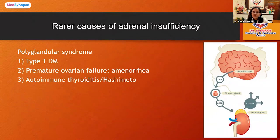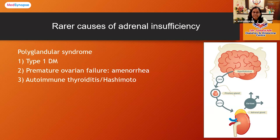There are also rarer causes of adrenal insufficiency related to endocrine conditions, such as polyglandular syndrome. There are three types of polyglandular syndrome, and they are associated with other autoimmune conditions like type 1 diabetes, premature ovarian failure, and autoimmune thyroiditis. In one of these conditions, the patient may also have mucocutaneous candidiasis starting from adolescence.